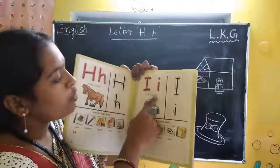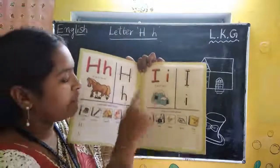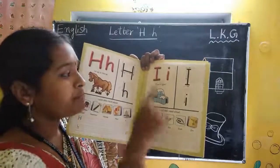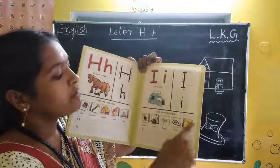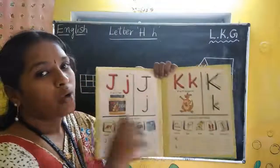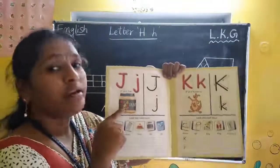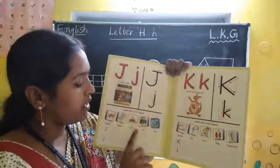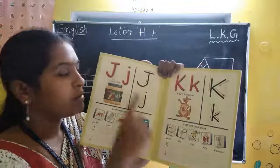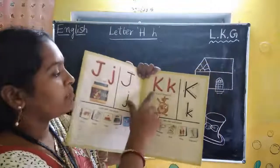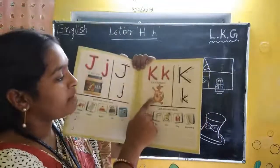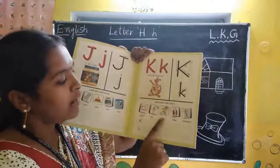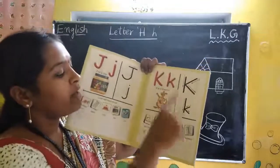Capital I and small I. I for igloo, I for insect, I for ink, I for India, I for ivy. Now capital J and small J. J for jam, J for jackal, J for jeans, J for jelly, J for jar, J for jet. Capital K and small K. K for kangaroo, K for key, K for kite, K for king, K for keyboard.